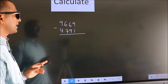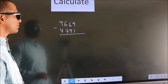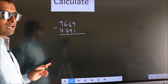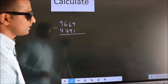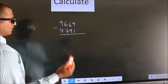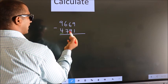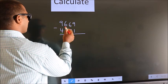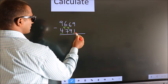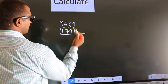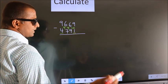Calculate 9669 minus 4791. How do we subtract faster? We should leave the first digit, and here we write 9, here 9, and for the last digit we write 10. Now we subtract.